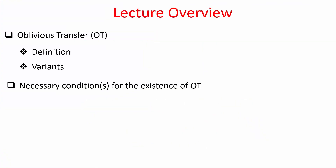Hello everyone, welcome to this lecture. In this lecture we will discuss a very important cryptographic primitive called oblivious transfer, or in short OT. We want to discuss oblivious transfer because we want to design the preprocessing phase for generating additively shared multiplication triples in an honest majority setting, and oblivious transfer is going to play a very crucial role there.